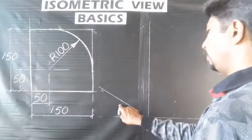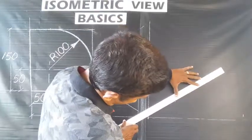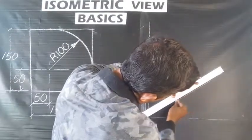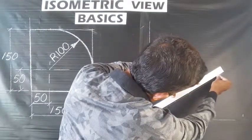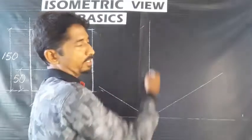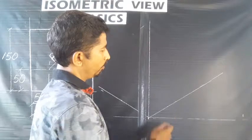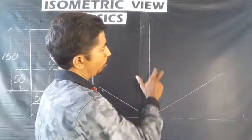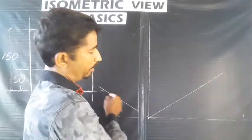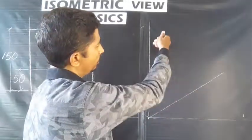This is the isometric Y-axis. This is the isometric X-axis. This is the isometric Z-axis. In this example, we want to use isometric X-axis, Z-axis, and isometric Y-axis to complete the drawing.